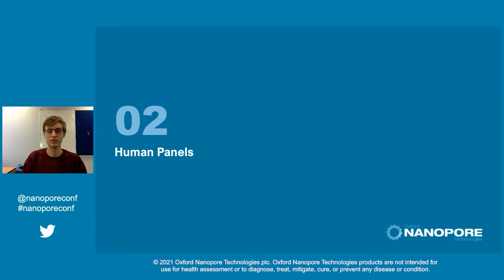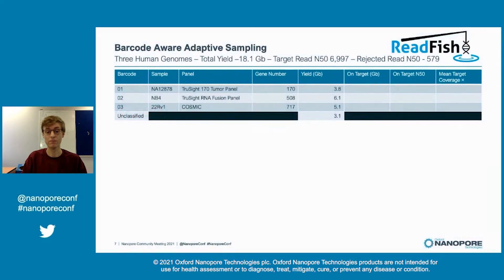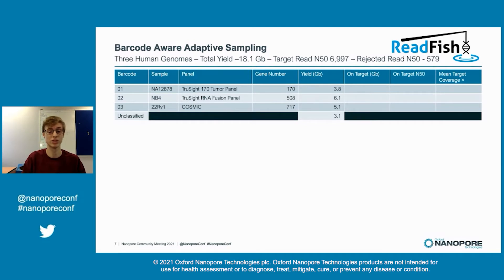Now that we have a system that works, how can we use this in a real-world scenario? Human panels are an obvious choice. On a single GridION flow cell, we ran three barcoded samples using different human cell lines. Barcode 1 used NA12878, a well-characterized cell line. Barcode 2 used NB4, a leukemic cell line with a known fusion between the genes PML and RARA. Barcode 3 used 22RV1, a complex cell line with copy number variations. For each sample, we chose a panel based on their known characteristics: barcode 1 used the TruSight 170 gene tumor panel, barcode 2 targeted the 508 genes from the TruSight RNA panel due to the fusion, while barcode 3 used the Cosmic panel of somatic cancer genes with 717 genes.